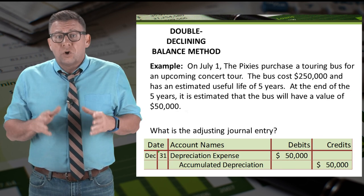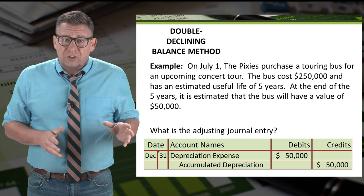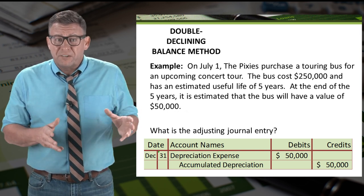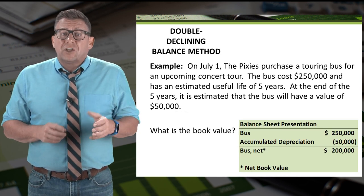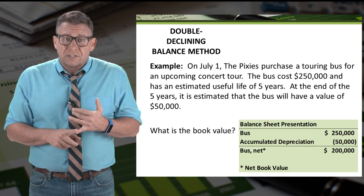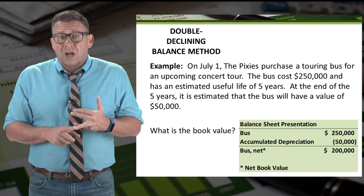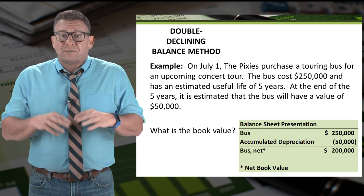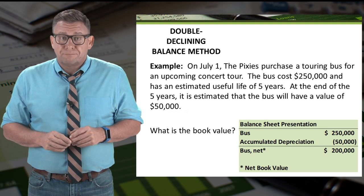We record the adjusting entry by debiting depreciation expense and crediting accumulated depreciation for $50,000. The book value is the cost of $250,000 minus accumulated depreciation of $50,000, giving us a net book value of $200,000.